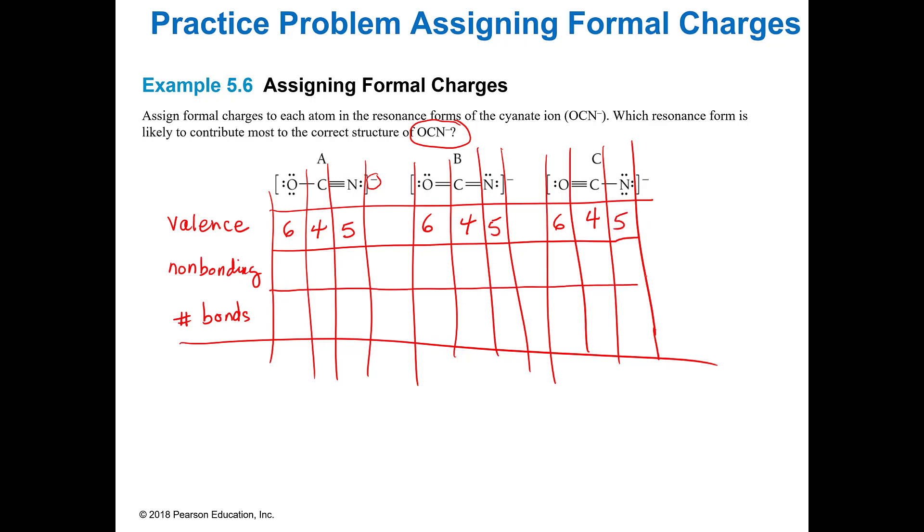Then I'm going to look and see how many non-bonding electrons does that have. It has six. And it has one bond. So six minus six minus one is a negative one. The central one, it has no non-bonding and it has four bonds. So four minus four is zero because it's valence minus that minus that. Then the last one, the nitrogen, it has two non-bonding electrons and three. So that's a zero. Notice that that equals negative one, which is the charge, which that is correct.